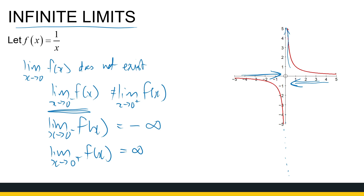Even though the limit at zero doesn't exist, we can still see how the graph behaves as x gets closer and closer to zero. This information is very valuable when we talk about graph sketching. So let's look at some more examples.